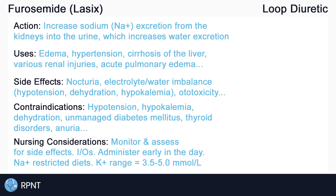Always monitor and assess for side effects of furosemide, and monitor intake and output as needed. It is important to administer furosemide early in the morning — it is often given between 8am and 12pm to reduce nocturia. Clients are often placed on sodium-restricted diets while taking furosemide, because high sodium intake can eliminate the effects of a loop diuretic.